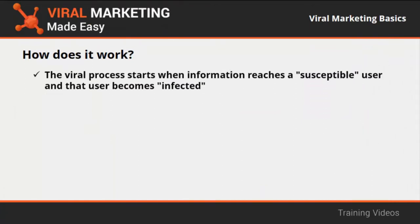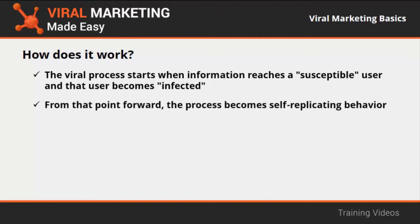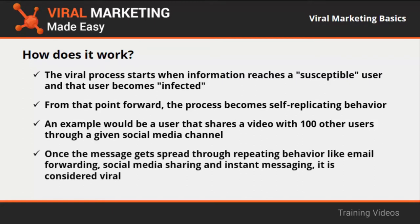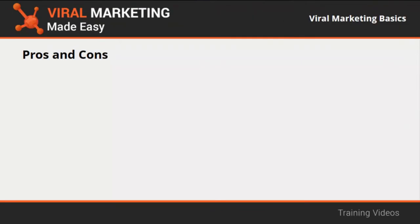The viral process starts when information reaches a susceptible user who becomes infected — meaning the user accepts the idea, shares it with others, and infects them. From that point, the process becomes self-replicating. For example, a user shares a video with 100 users, each of whom shares it with 100 more, and so on. Once the message spreads through email forwarding, social media sharing, and instant messaging, it is considered viral.